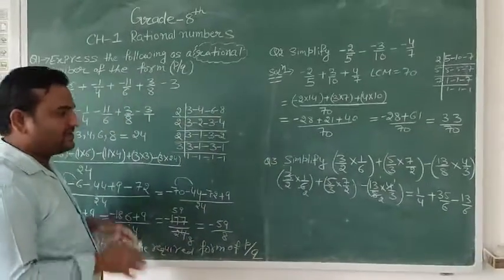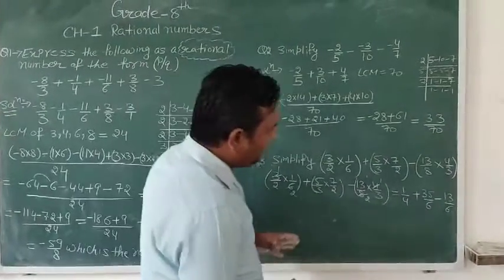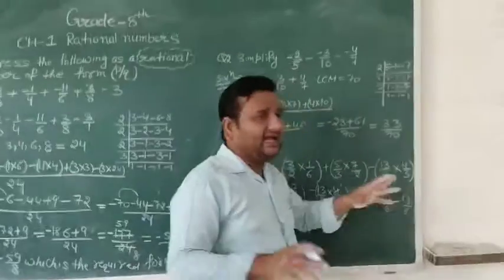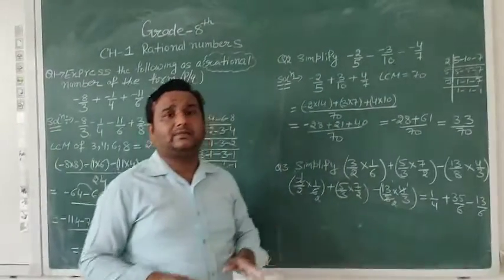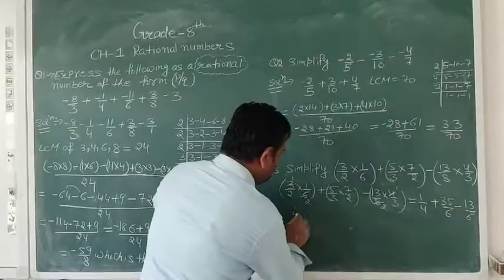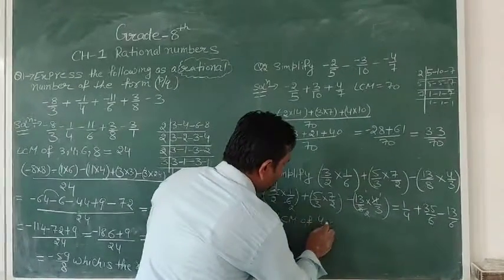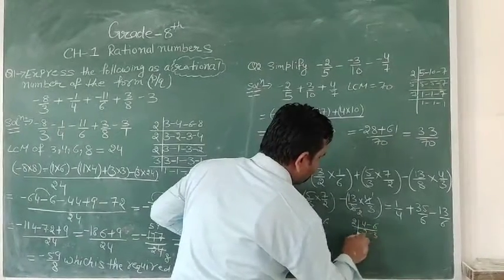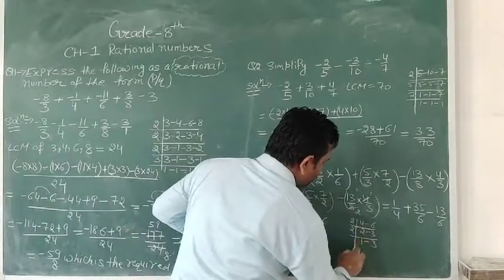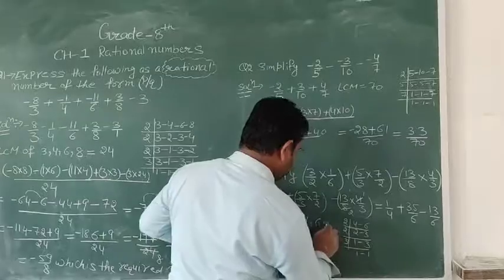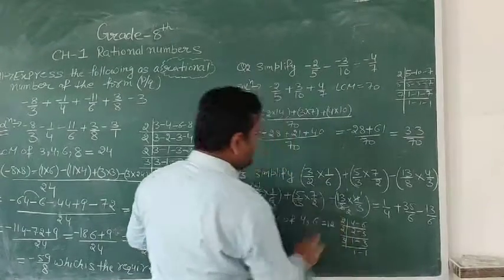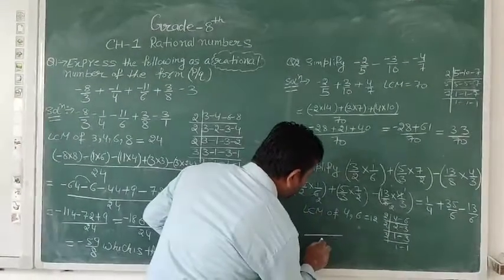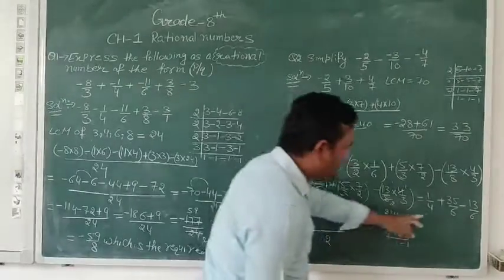After solving multiplication, we are left with plus and minus signs. We use LCM to solve these. LCM of 4 and 6: dividing by 2 gives 2 and 3; then by 2 gives 1 and 3; then by 3 gives 1 and 1. So LCM = 2 × 2 × 3 = 12. Writing 12 as the common denominator.